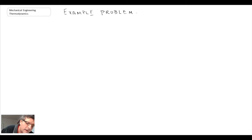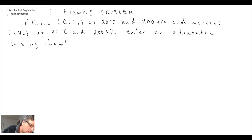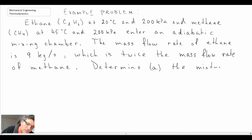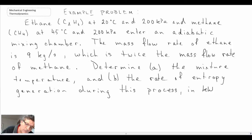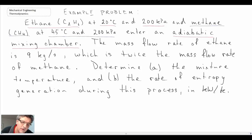I'll begin by writing out the problem statement and then we'll proceed through the problem. What we have is an adiabatic mixing chamber with two fluid streams coming in. One is ethane at 20°C and 200 kPa, and the other is methane at 45°C and 200 kPa.